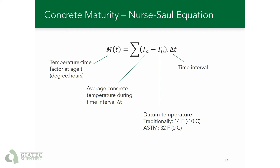The datum temperature is the only parameter other than concrete temperature in this equation. ASTM provides a test method to measure the datum temperature for a particular concrete mix, but traditionally the datum temperature can be assumed to be 14°F or -10°C. ASTM also suggests that for a mix with cement type 1 and within certain temperature variations, the datum temperature can be taken as 32°F or 0°C. Note that if the concrete temperature drops below the datum temperature, we do not include the negative value in the sum — we simply eliminate that interval from the equation.